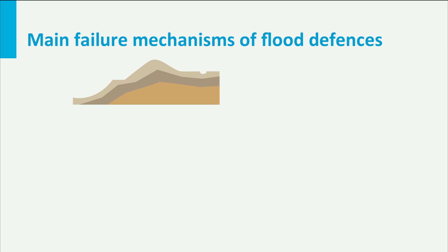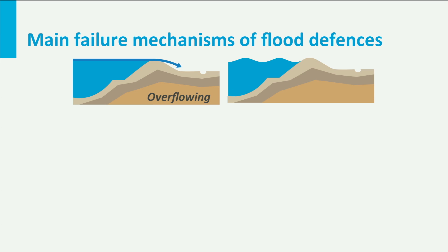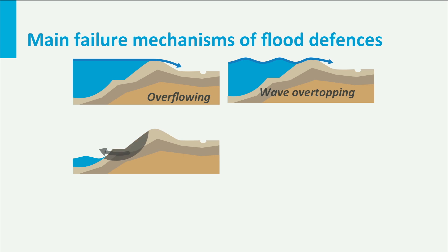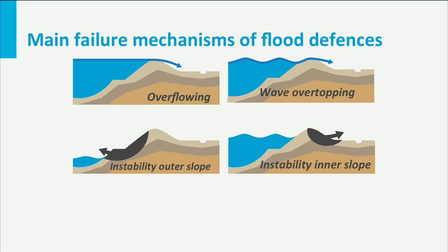A flood defence can fail due to various failure mechanisms. We focus on some important mechanisms for an earthen dike. Overflow or wave overtopping can lead to erosion on the inside of the dike. During a high water level, the dike can get saturated and instability of the inner or outer slope can occur.